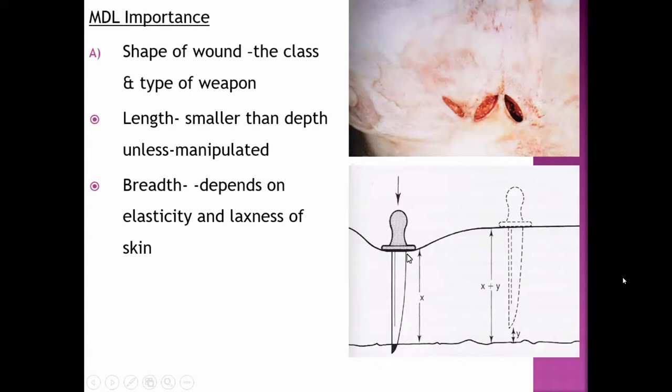In this picture, this is a single-edged weapon. One edge is blunt, another edge is sharp. In this picture, both edges are sharp. If both edges are sharp, then this type of wound, spindle-shaped or elliptical wound is seen.